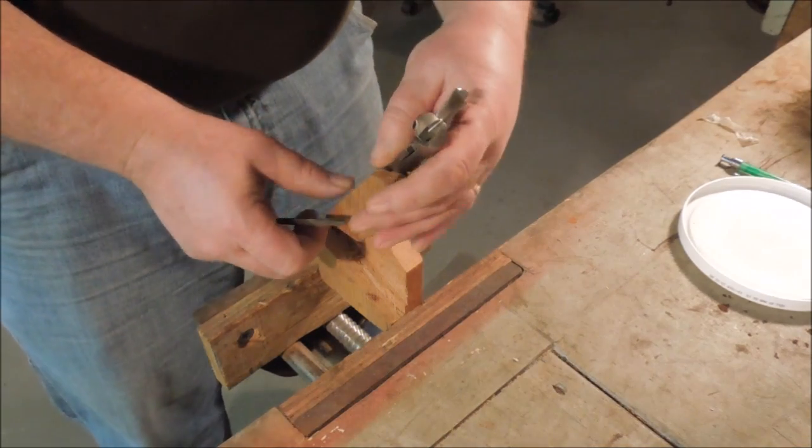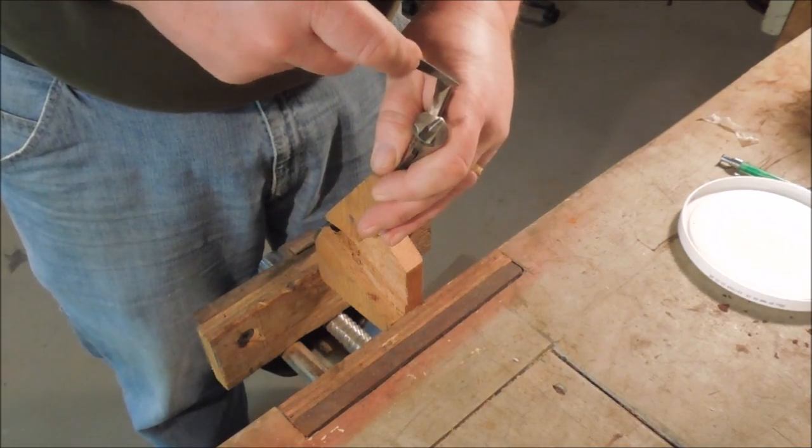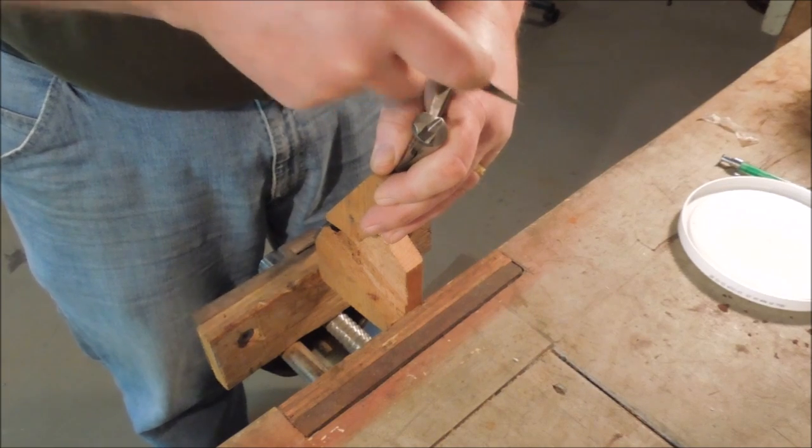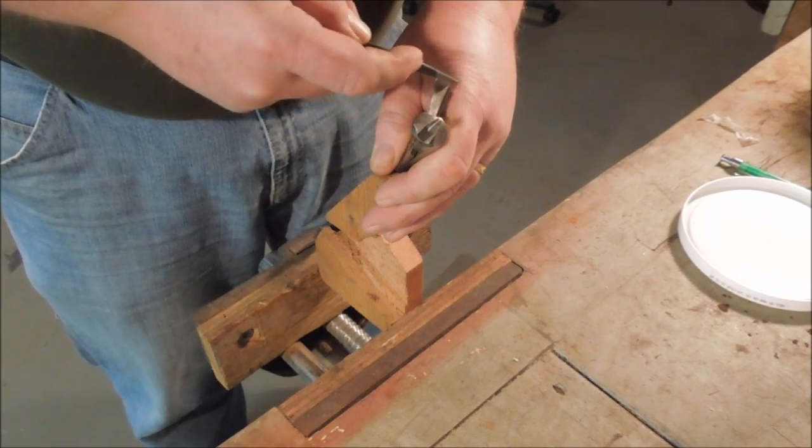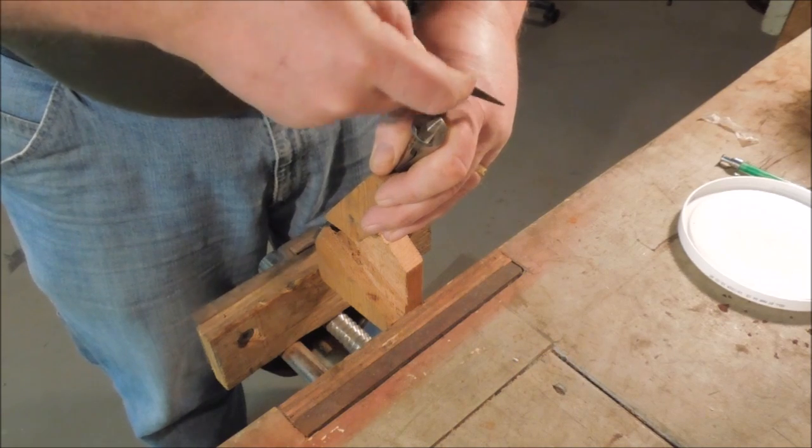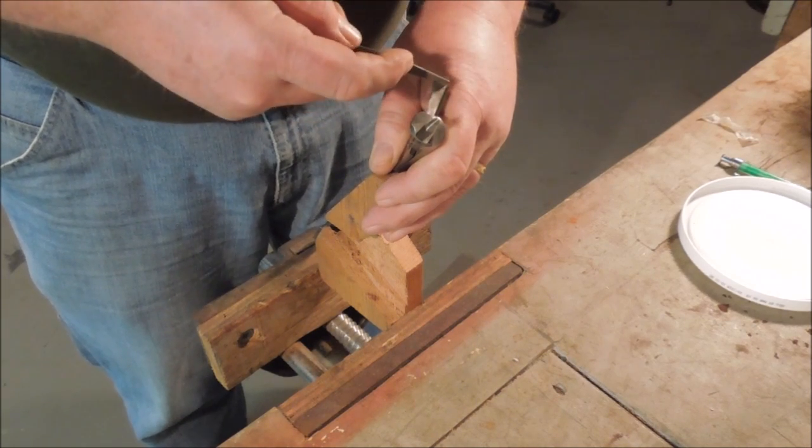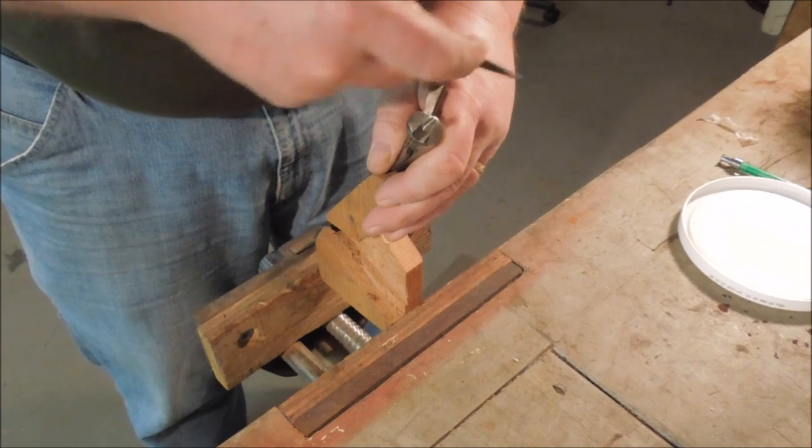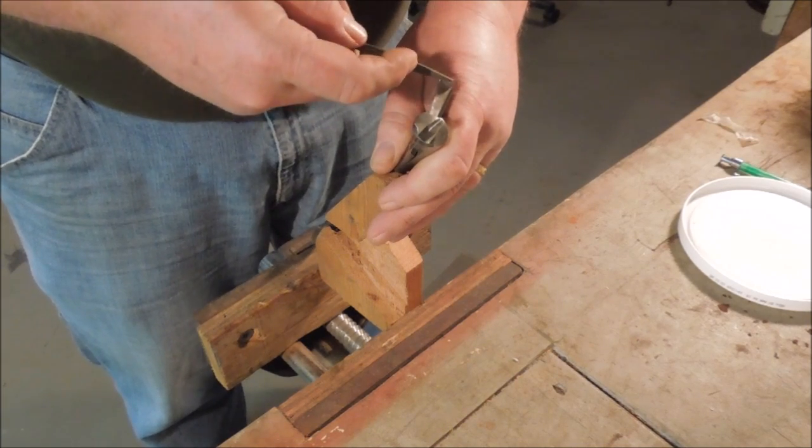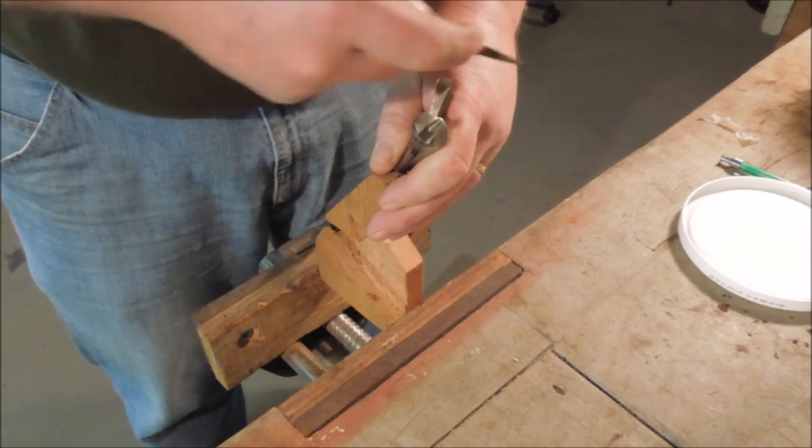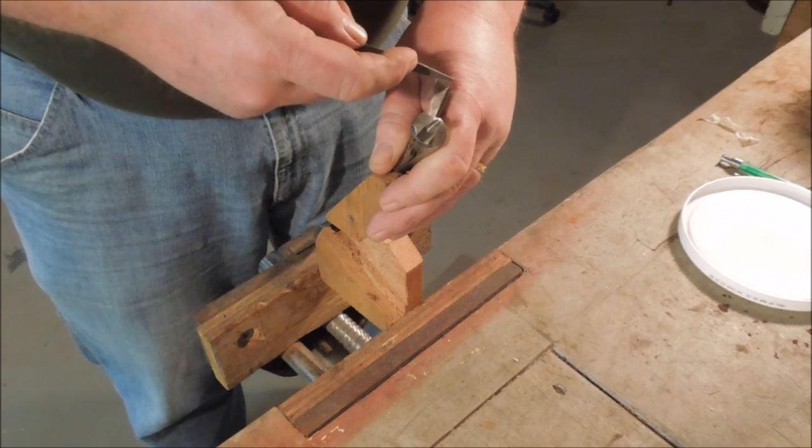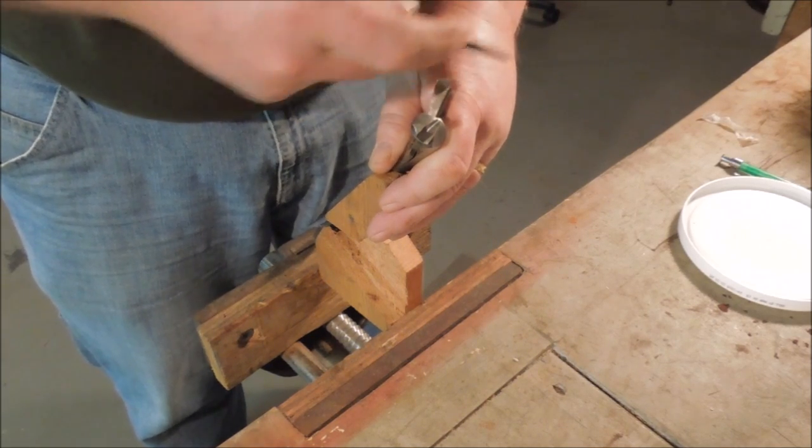I'm filing the spur on the inside, because if I file it on the outside I'm reducing the diameter that the spur cuts and making it so that the blade has to wedge itself down into the hole. That's a surefire way to make this thing strip out the pilot thread.